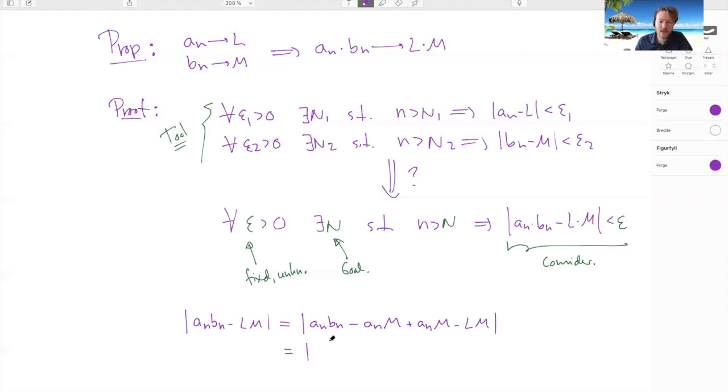Because now I can factor inside of here. So I can take the an outside, and suddenly I have bn minus m, so this guy I'm able to bound. And then I can factor m here, then I have an minus l here, and that guy I know something about. And then I can use triangle inequality to get this, and then I'm in business.